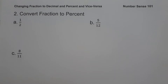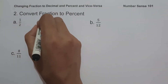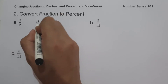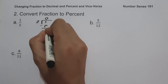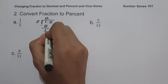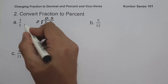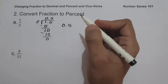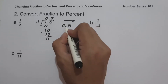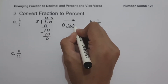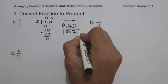On the second set of examples, we are going to convert fraction to percent. In converting fraction to percent, the first thing we do is convert the fraction to decimal, then move two decimal places from left to right. On letter A, we have 1 half. 1 divided by 2: we bring down 0, 10 divided by 2 is 5, 10 minus 10 is 0. So 1 half in decimal is 0.5. Moving two decimal places from left to right gives us 50%.